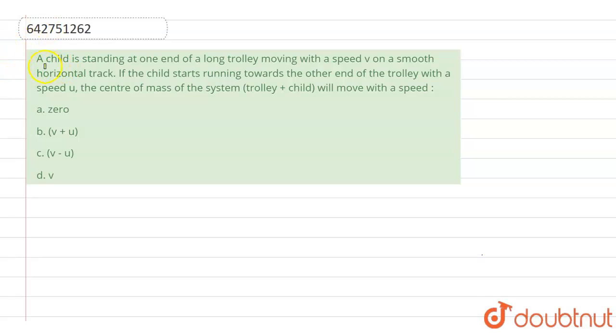In the question it says that a child is standing at one end of a long trolley moving with a speed of v on a smooth horizontal track. If the child starts running towards the other end of the trolley with a speed u, then the center of mass of the system will move with the speed...